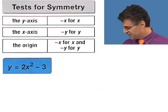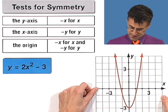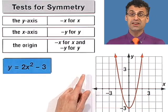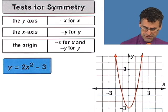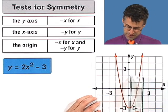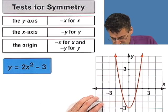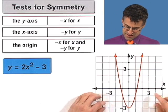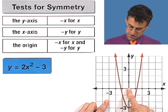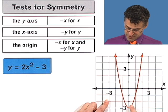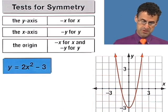The only symmetry we discovered was with respect to the y-axis, which means whatever happens to the right of the y-axis must happen reflectively on the left. I have a graph of this equation — look how pretty. It's a parabola, and notice it's exactly what we predicted: it is symmetric with respect to the y-axis. But it's not symmetric with respect to the x-axis, and it's certainly not symmetric with respect to the origin.